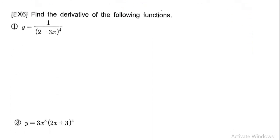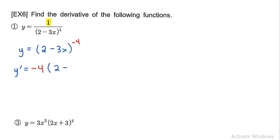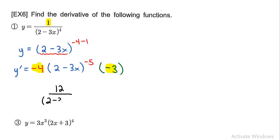We're now moving on to example number 6. For this function, since there's a 1 on the numerator, you can rewrite this as 2 minus 3x all to the power of negative 4. Finding the derivative is easier: the negative 4 comes out in front, copy the rest, subtract 1 from the power giving negative 5, then the derivative of the inside is negative 3. Multiplying negative 4 times negative 3 gives 12, with 2 minus 3x to the power of 5 on the denominator. That's the derivative for that question.